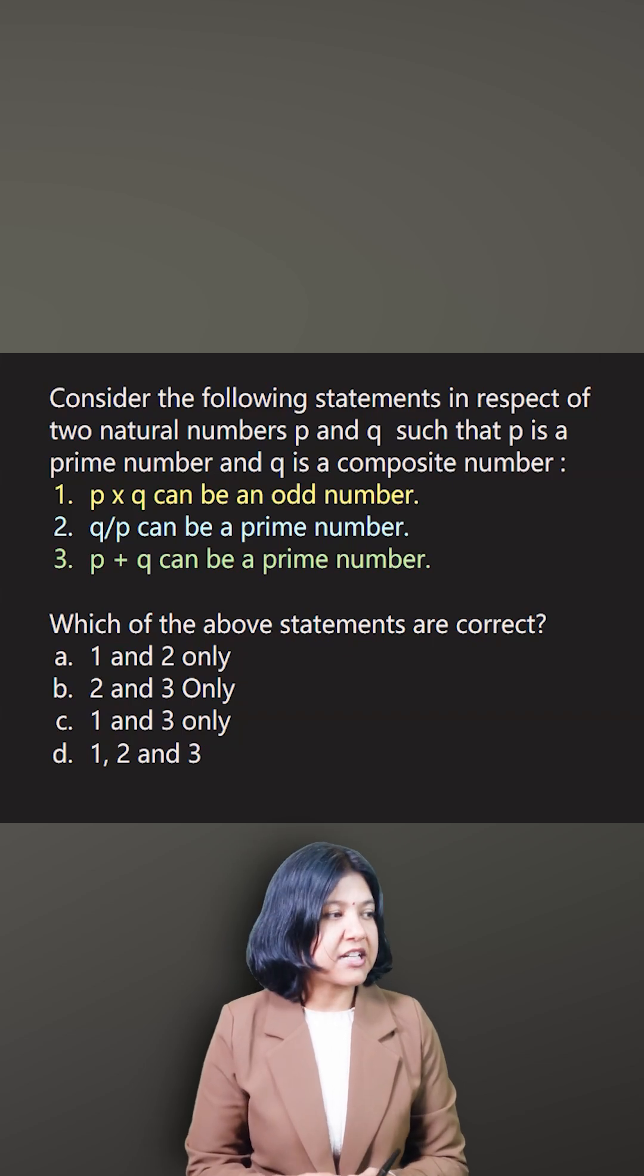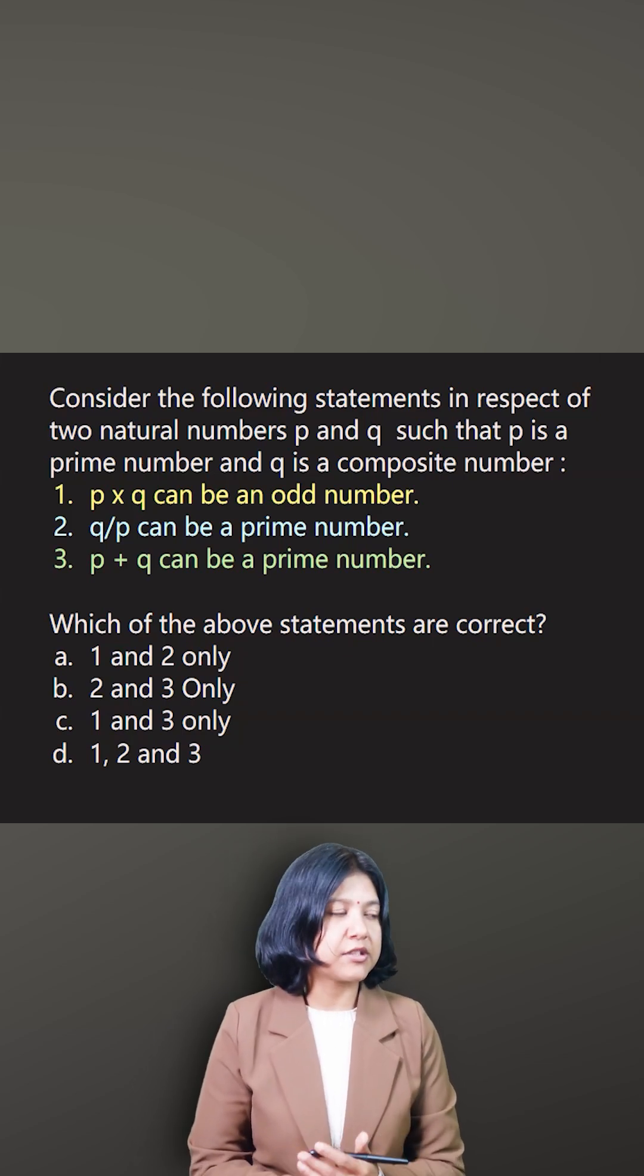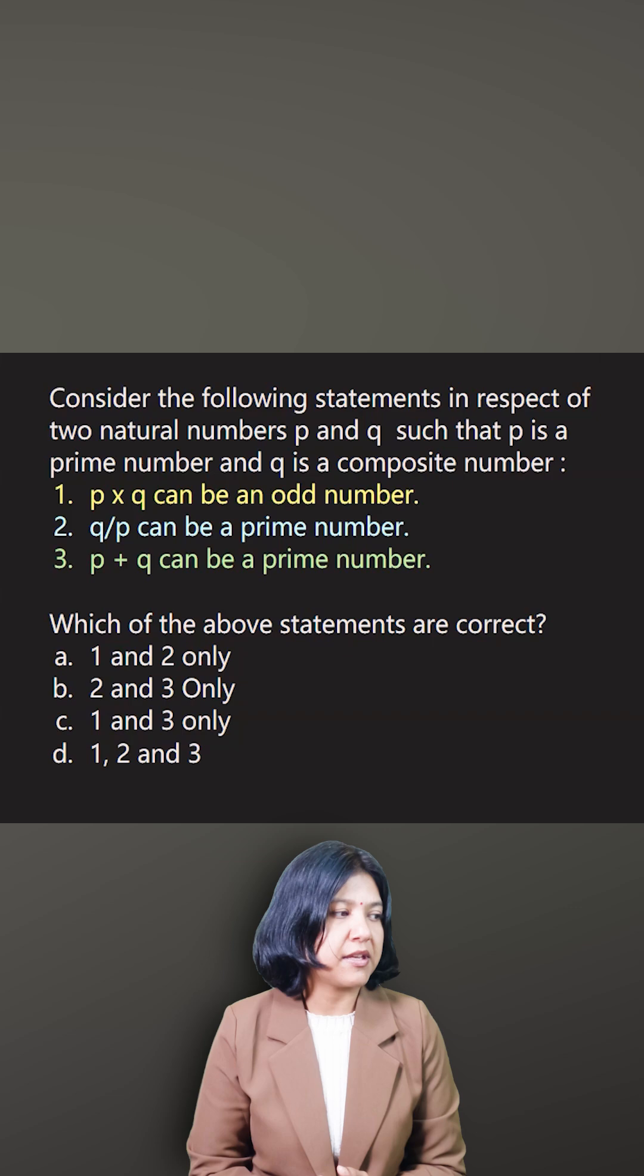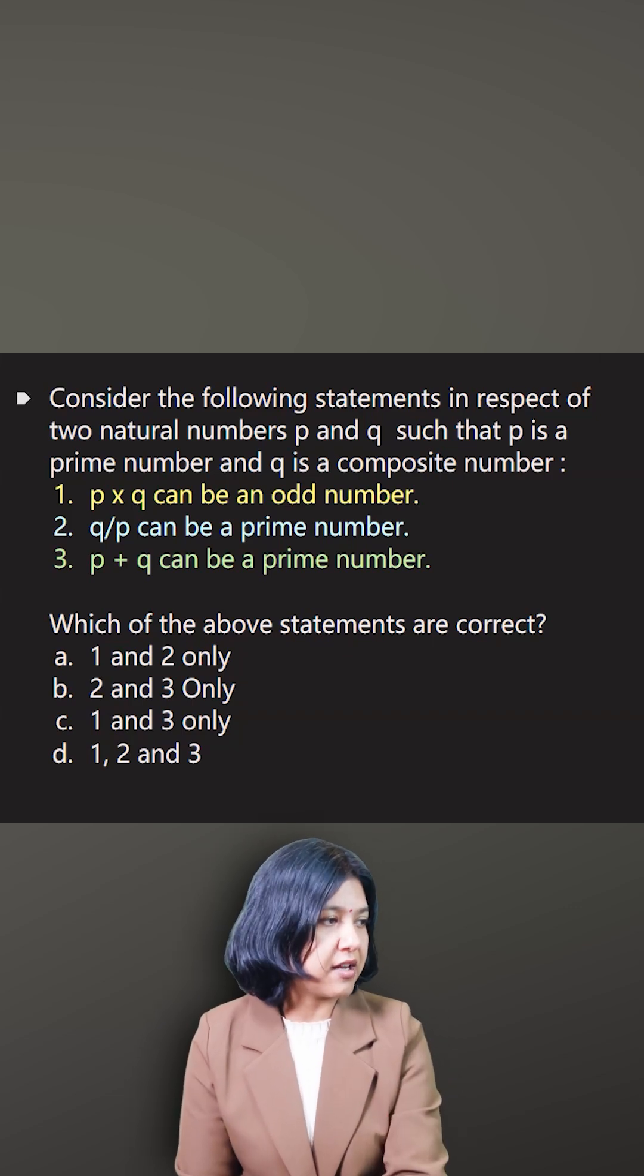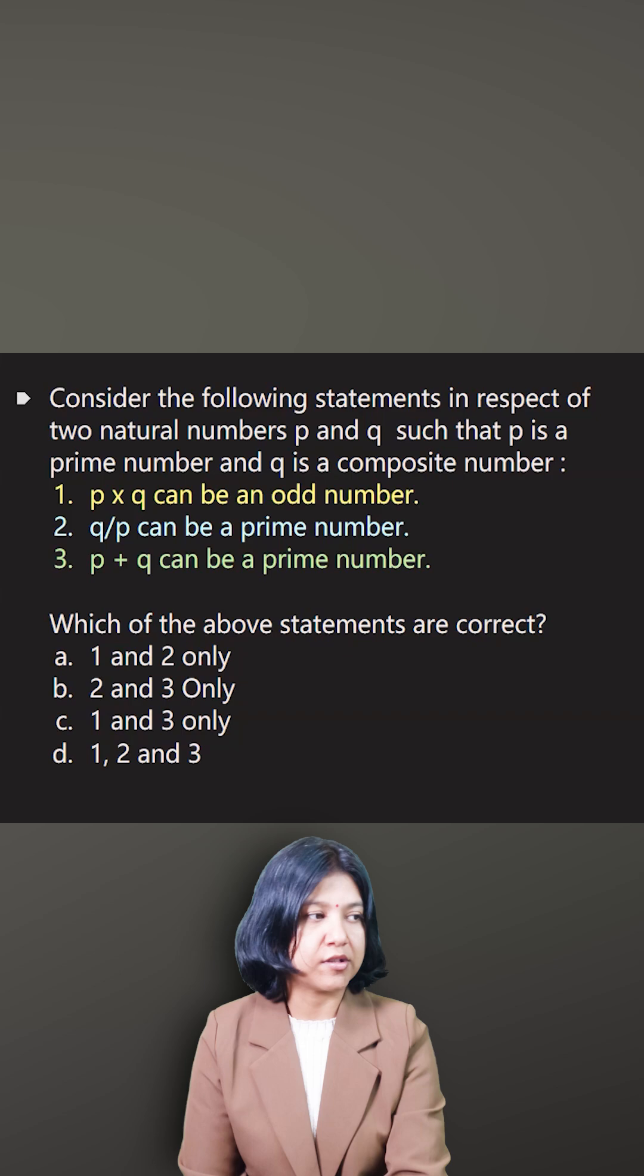You have been given three statements here. P times Q can be an odd number. Q times P can be a prime number, and P plus Q can be a prime number. What's the scenario here? P is a prime number and Q is a composite number.